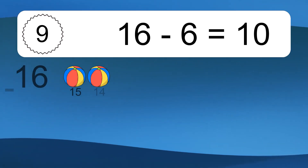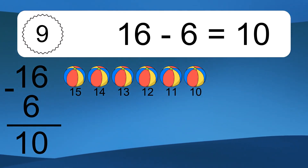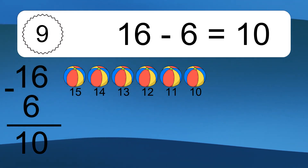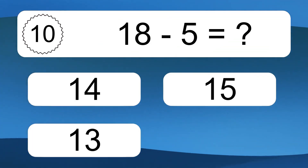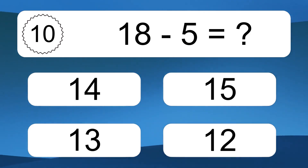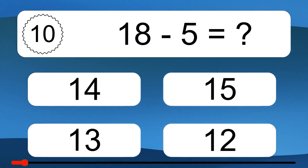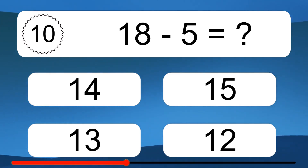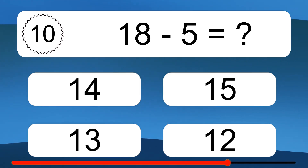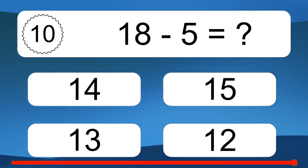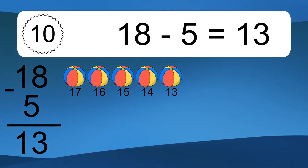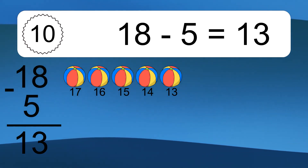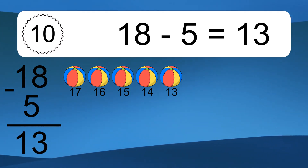16 minus 6 equals what? 16 minus 6 equals 10. Let's count it: 15, 14, 13, 12, 11, 10. 18 minus 5 equals what? 18 minus 5 equals 13. Let's count it: 17, 16, 15, 14, 13.